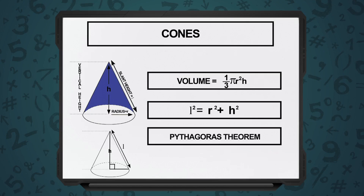Now, pi r squared h we knew is the volume of a right circular cylinder. So, for the cone, it is the same thing pi r squared h but it is divided by 3. That is the volume of a cone.